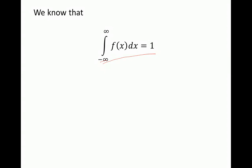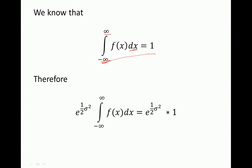So our integral is just the integral from negative infinity to infinity of f of x. From the definition of a probability density function, if we sum over the whole range of x, the sum of all probabilities must equal 1. We're summing from negative infinity to infinity, which is the whole range, so the whole integral equals 1. Therefore our expression simplifies to e to the power of one half sigma squared times 1.